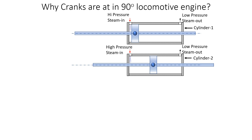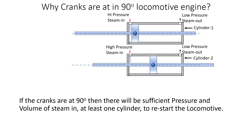That is why the two cranks are at 90 degrees. If the engine stops with one piston at top dead center, the other will be somewhere in mid-stroke, so there will be enough steam pressure and volume in at least one cylinder to overcome the engine's inertia and restart it.